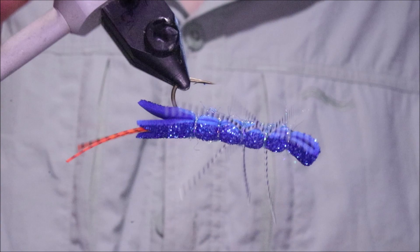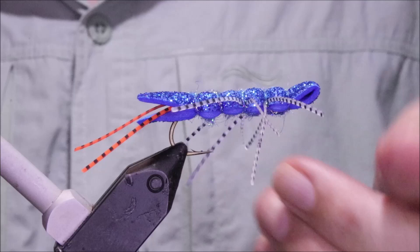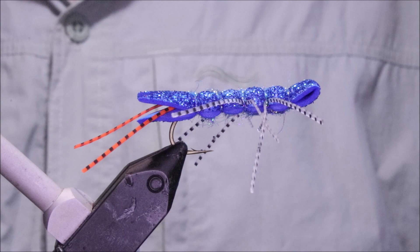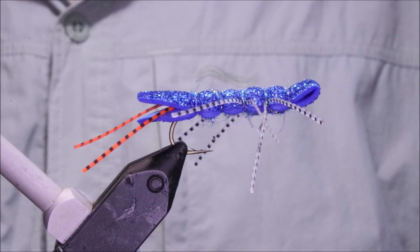So there you go, this is Mr. Wigley, a blue damsel version. Obviously tie them whatever color you like - yellow's good, chartreuse, black. But it's a tasty little fly and the smallies love them. So hope that was useful, hope you enjoyed it. If you did, remember to give me a like below and I'll see you for another video. Tight lines guys, bye!